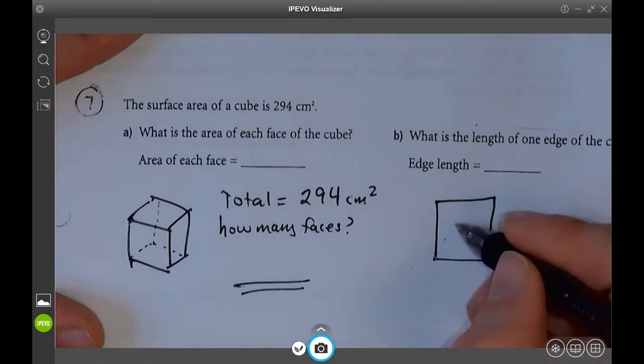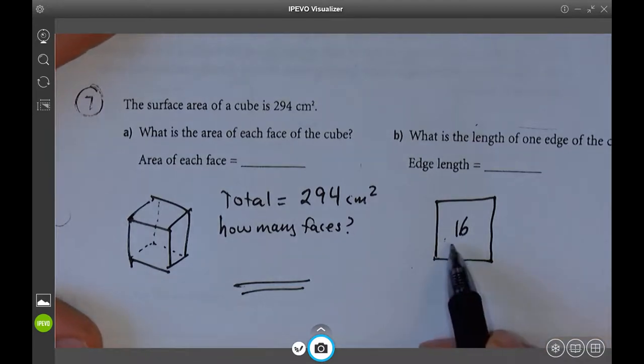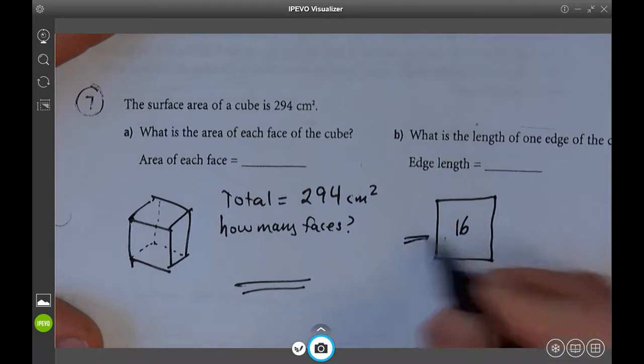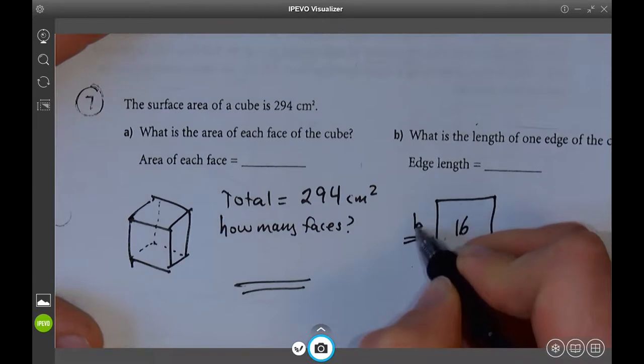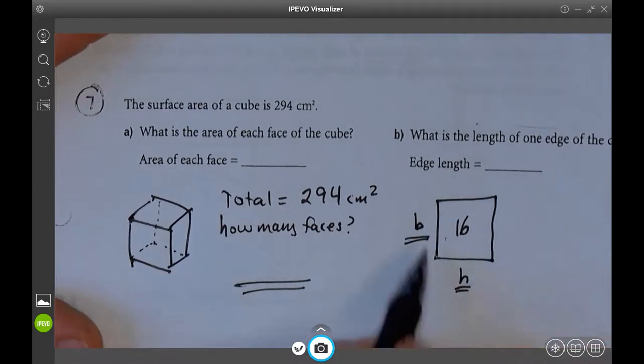Let's suppose it's 16. It's not, but let's suppose it is 16. If the area is 16, what is its side length? What is base times height? Well, we know that the base and the height are the same. It's a square. It's a cube.